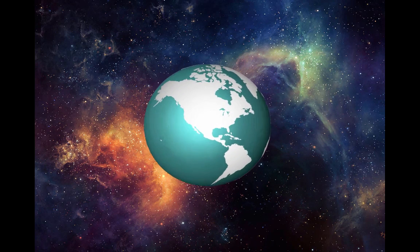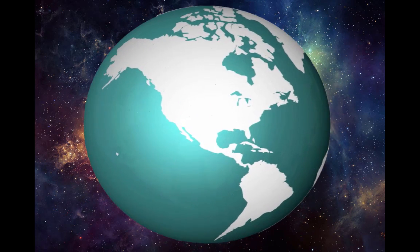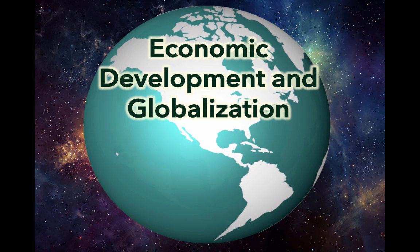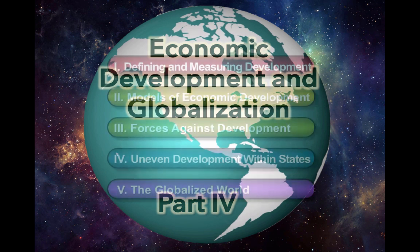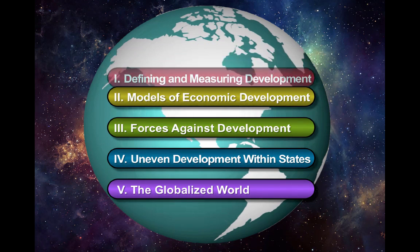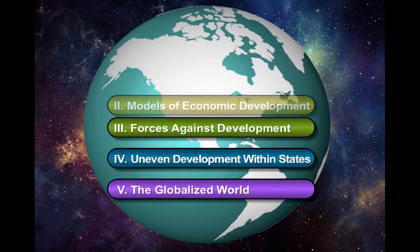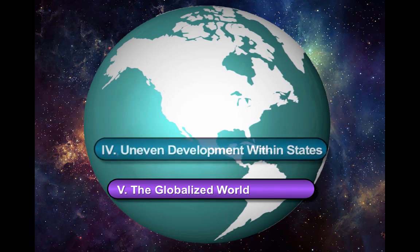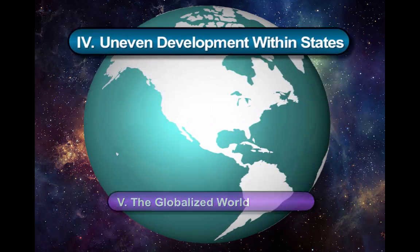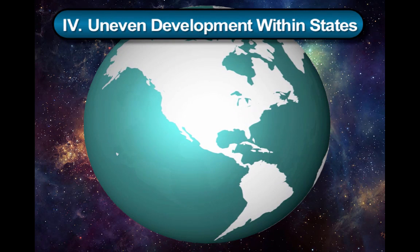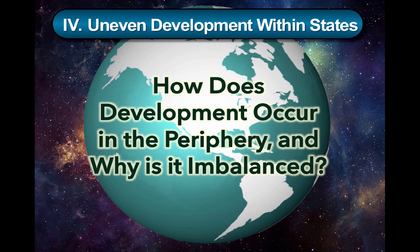Welcome to Economic Development and Globalization, Part 4. In this video, we're going to be taking a look at uneven development within states and ask this essential question: How does development occur in the periphery and why is it imbalanced?